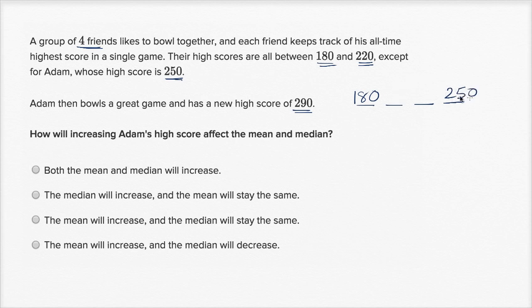And if you take Adam out of the picture, the high score is 220. We actually don't know what this score right over there is. Now, after Adam bowls a great new game and has a new high score of 290, what does the data set look like? Well, this guy's high score hasn't changed, this guy's high score hasn't changed, this guy's high score hasn't changed. But now Adam has a new high score. Instead of 250, it is now 290.